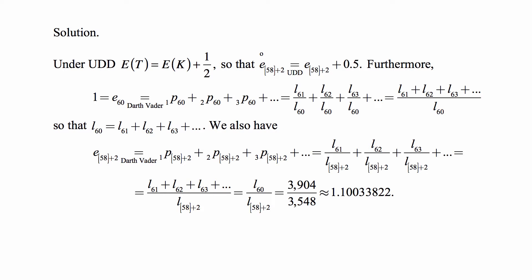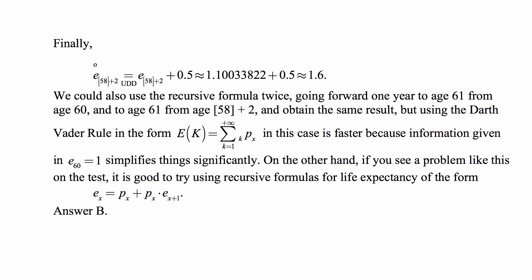From the data that we have, that's 3904 divided by 3548, so approximately 1.10. Then the complete life expectancy under UDD is what we just calculated plus one-half. So the answer is 1.6, which is answer B.